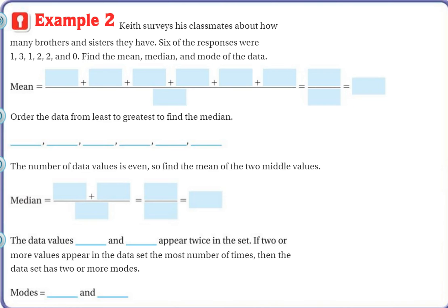Alright, let's go on to example two on page 496. Keith surveys his classmates about how many brothers and sisters they have. Six of the responses were 1, and that's six different responses: 1, 3, 1, 2, 2, and 0. Find the mean, median, and mode.